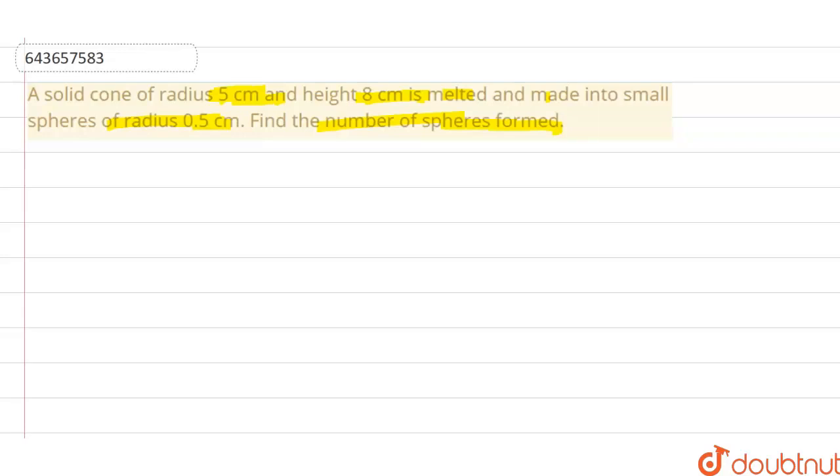Now, here, n numbers of spheres has been made. That means, volume of one sphere, if multiplied n times, since there are n number of spheres, total volume of cone can be obtained.